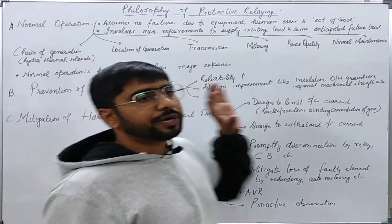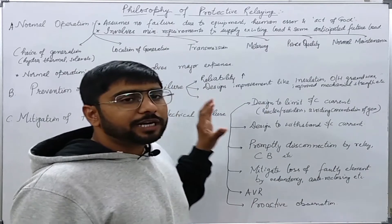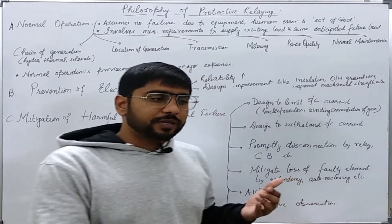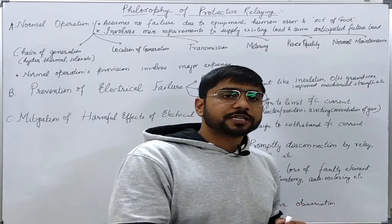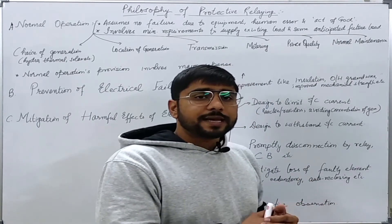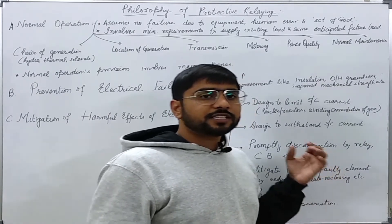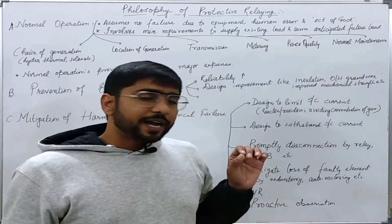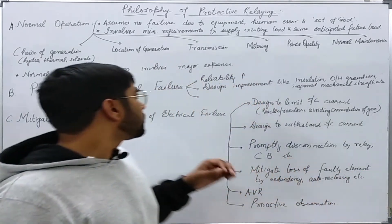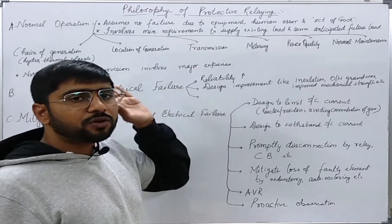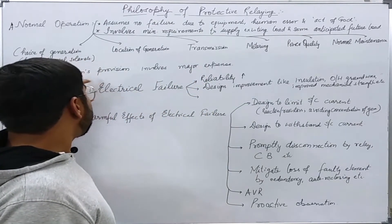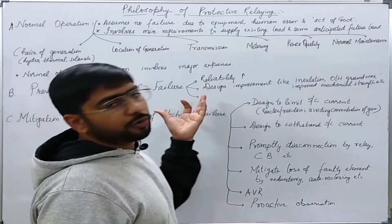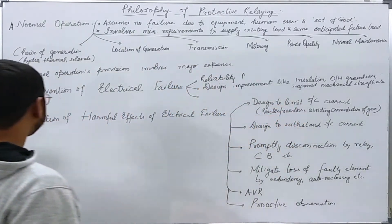However, there is a limit to prevention because ultimately economics comes into the picture. The law of diminishing returns applies — after a certain limit, the return from every added penny invested is reduced. So we cannot design a fully foolproof system; there can be failures due to human errors as well.